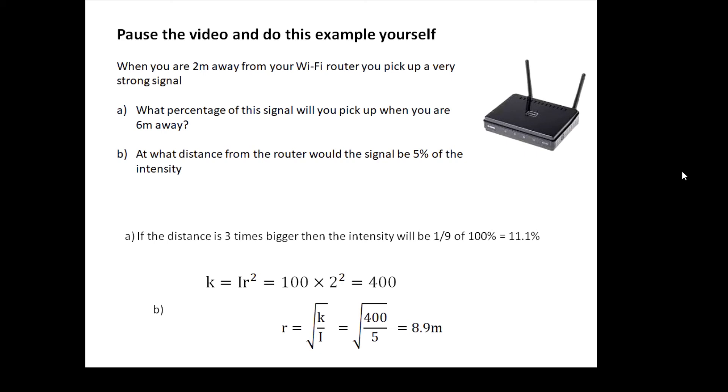Okay, so for the first one, the distance is three times bigger, so will the intensity be a third? No, it won't. It'll be a ninth, because it's 1 over 3 squared. And a ninth of 100 percent is 11.1 percent. 100 divided by 9 is 11.1.